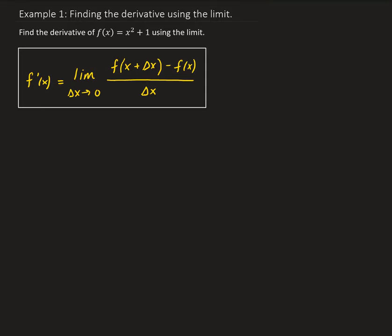In this example, we want to find the derivative of the given function using the limit definition for the derivative. The first thing we're going to do is evaluate the function at x plus delta x. We're given our function of x squared plus 1, so we're going to replace x with x plus delta x. So we have x plus delta x, all squared, plus 1, and then we can multiply this out to get x squared plus 2x times delta x plus delta x squared plus 1.